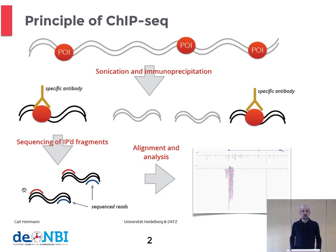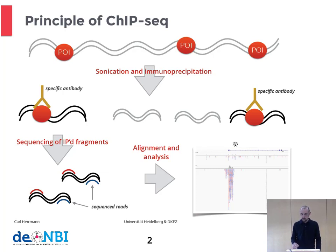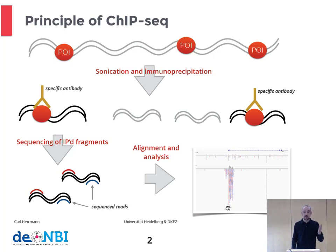What comes out of the sequencer are these red and blue reads, and the next step is to do an alignment on the reference genome. A typical situation is displayed at the bottom right, where we have a promoter of a gene and we see very nicely the red and blue reads that align and show a very specific enrichment at this position.